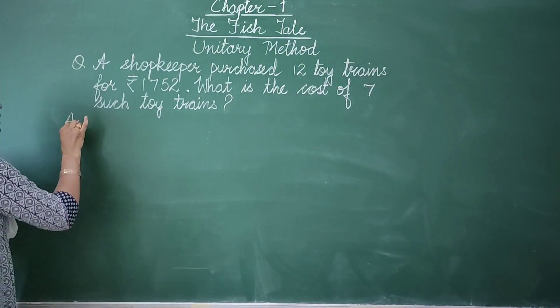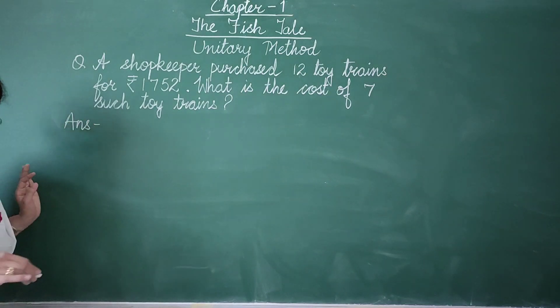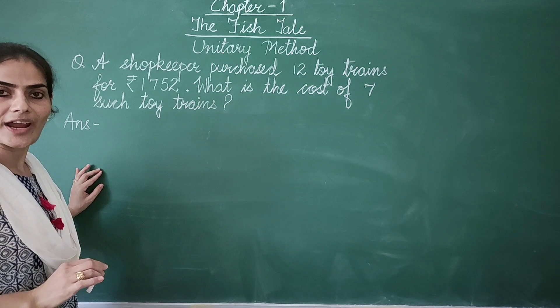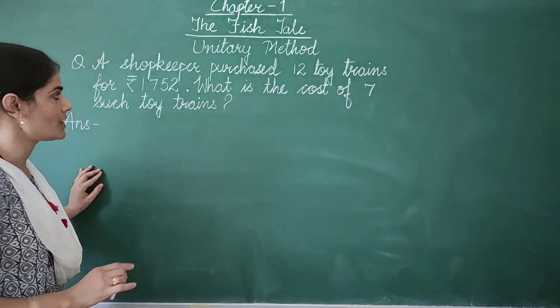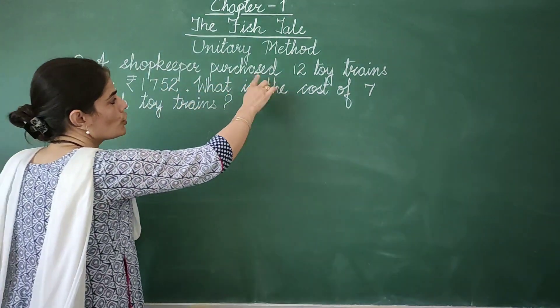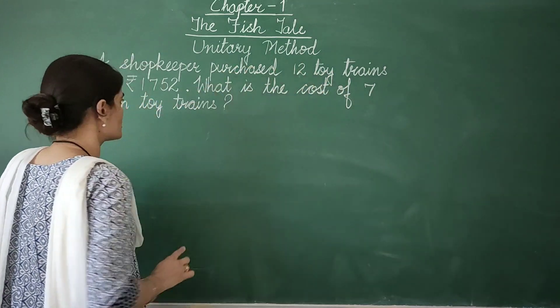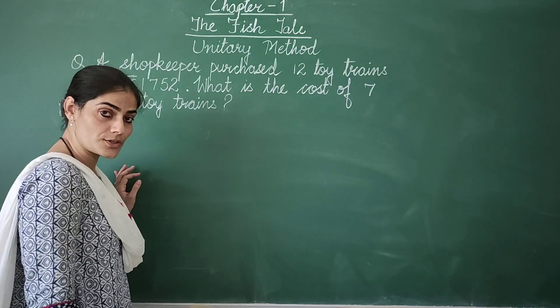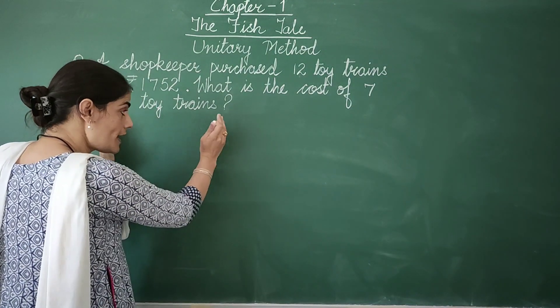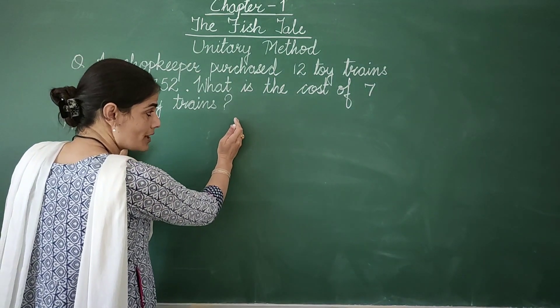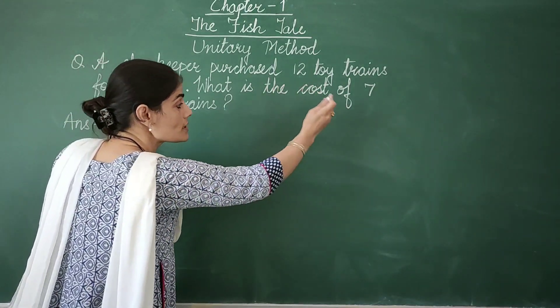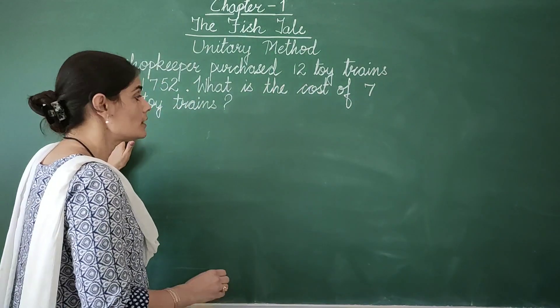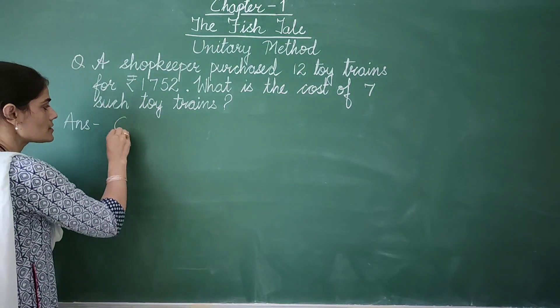Observe carefully. You all remember, whenever we are writing the answer of a story sum, we first write the given information. And what do we know? Cost of 12 toy trains. And we need to find the cost of 7 such toy trains. So I am going to frame this statement in such a way that the cost comes towards the right side of the equal to mark.